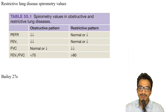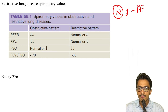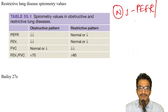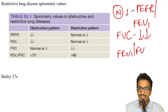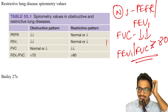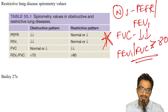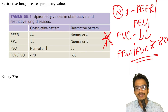For restrictive lung disease spirometry values: FVC is decreased, FEV1 is normal or low, and the FEV1 to FVC ratio is greater than 80%. This is very straightforward, taken from the table in Bailey. The questions are taken mostly from Bailey and Sabiston.